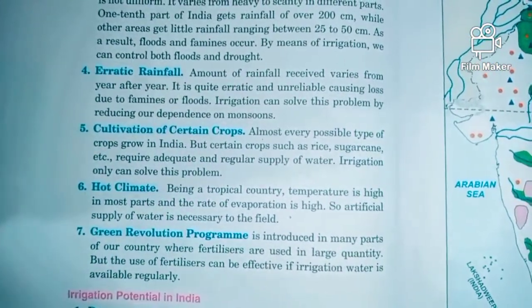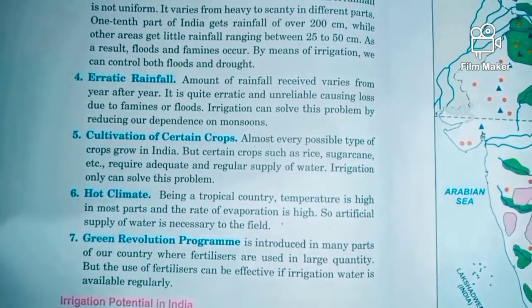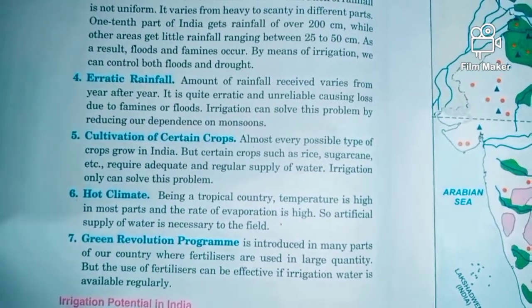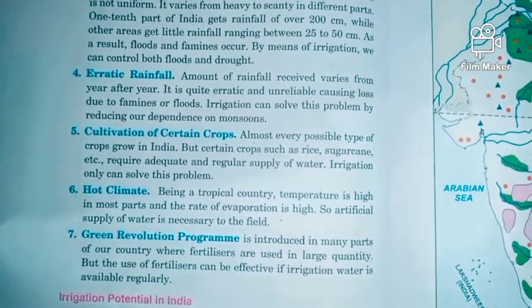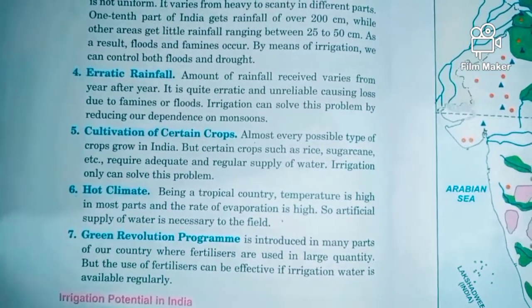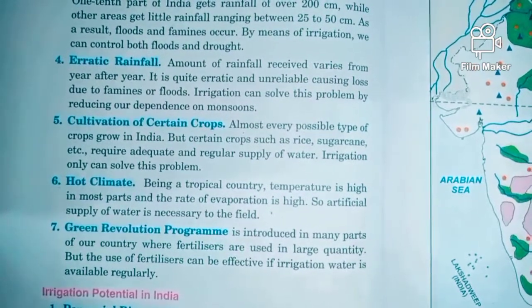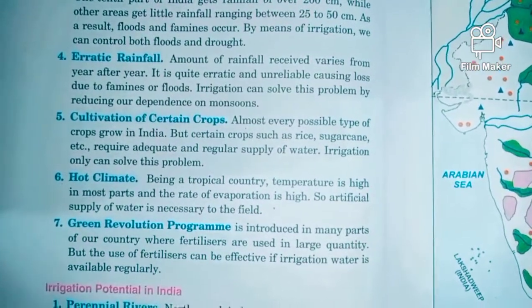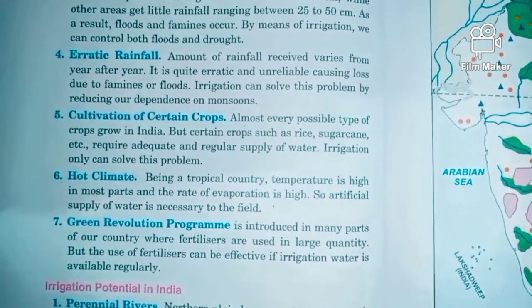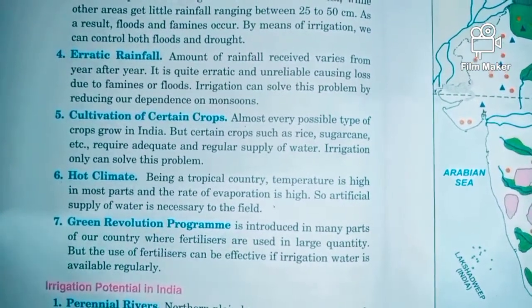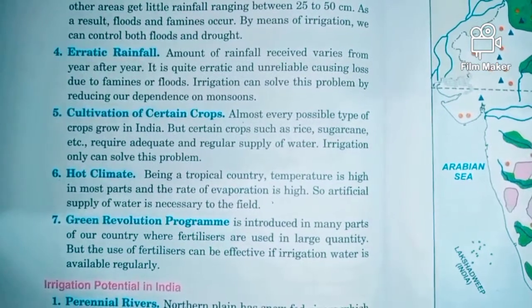The next reason is India's hot climate. India's climate is tropical and temperate, with temperatures that are a little higher across most of the country. Evaporation rates are very high here, and because evaporation is high, artificial water channels become necessary.